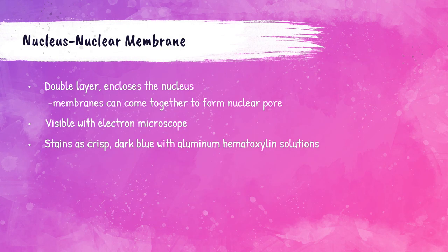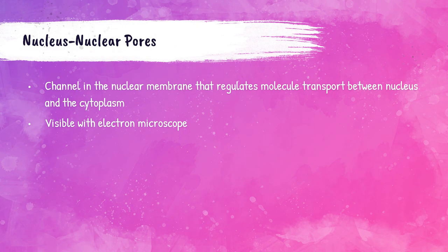The nuclear membrane is part of the nucleus; it encloses the nucleus as a double-layer membrane. Sometimes those membranes come together to form something called a nuclear pore. Nuclear membranes can be seen with an electron microscope and usually stain a crisp dark blue color with aluminum hematoxylin solutions. Nuclear pores are channels in the nuclear membrane that regulate molecular transport between the cell's nucleus and its cytoplasm, and these are also visible using electron microscopy.